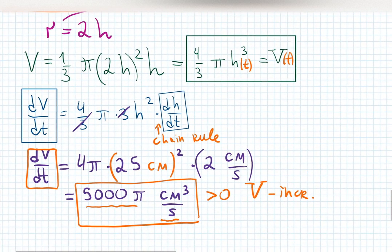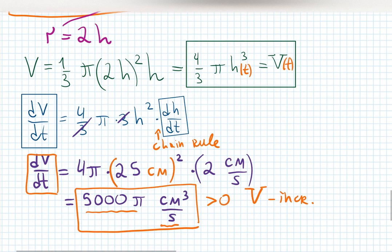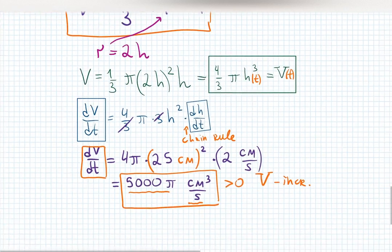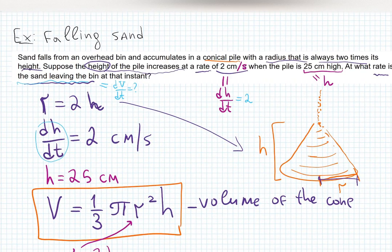In summary: read the problem, identify the shape and write its formula. Then make notes like I do — two was a derivative, 25 was not a derivative, it was just the height value. If one derivative is given, the other is unknown.